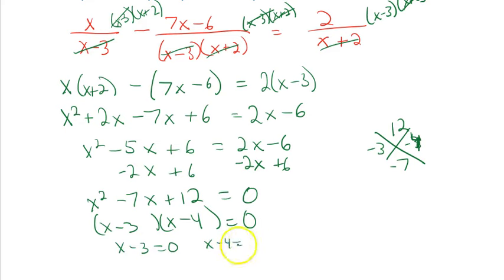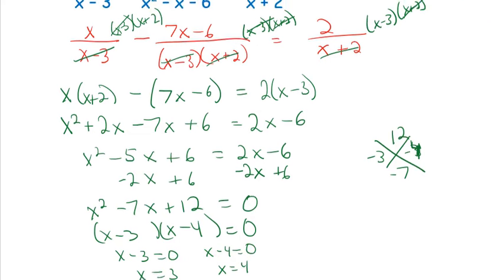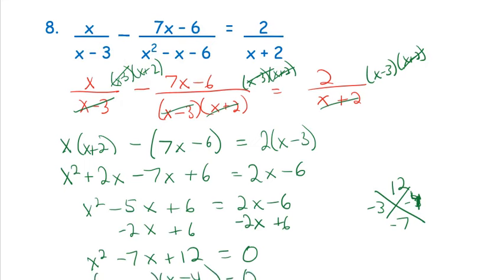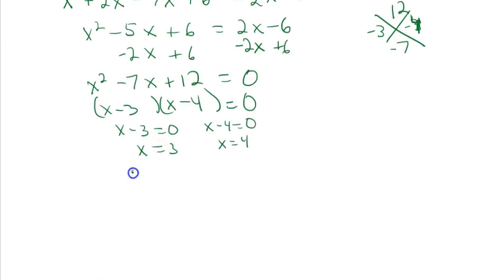Setting each factor equal to zero: x − 3 = 0 gives x = 3, and x − 4 = 0 gives x = 4. I need to check both. Plugging 3 back in, I get a zero in the denominator — that's an extraneous solution. Plugging in 4, I'm okay on all denominators. So x = 3 is extraneous and x = 4 is the only valid answer. This is not a no-solution problem because we did have one solution that worked. And that concludes this lesson.